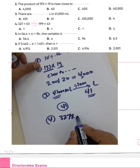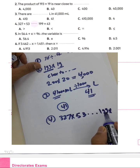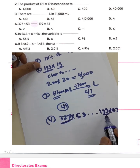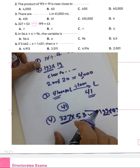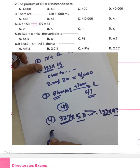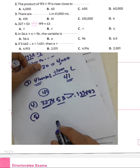Question number four: 327 times 53, or 199 times 43 — which is greatest? We know 327 is greater than 199 and 53 is greater than 43, so the result on the left-hand side will be greater than the result on the right-hand side.